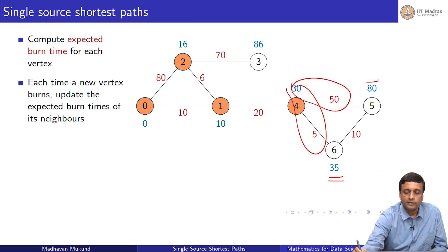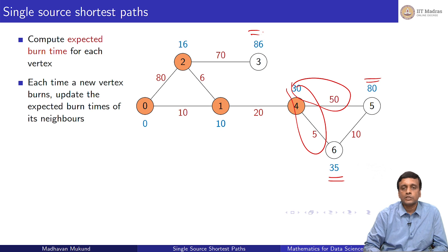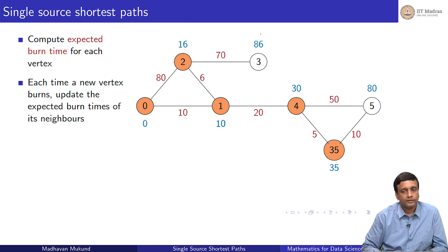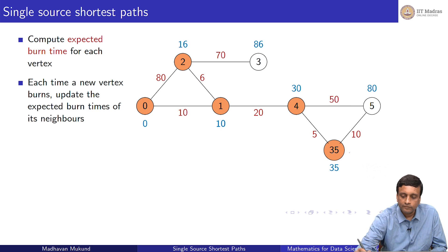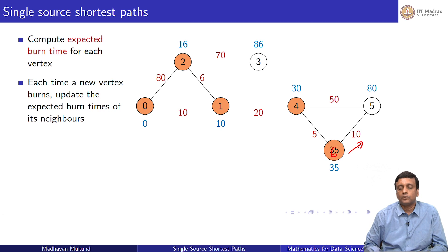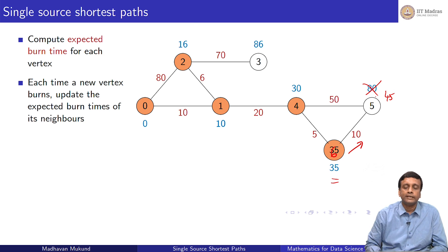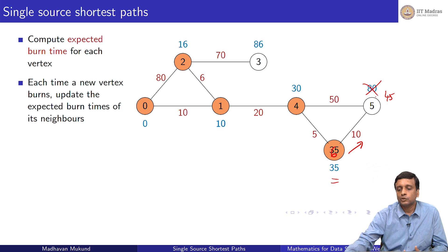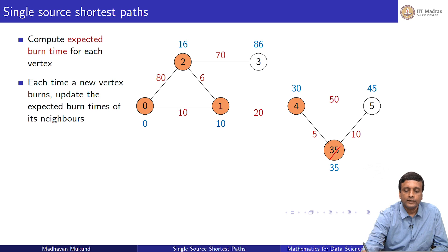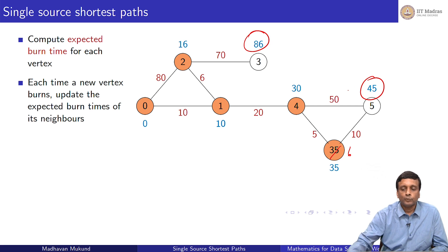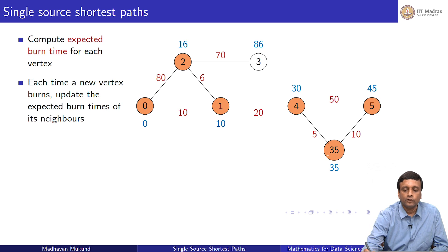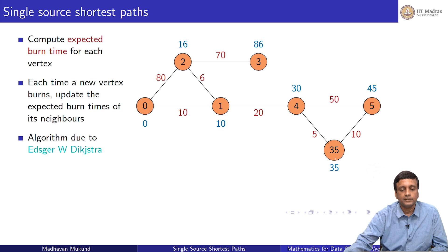Among the unburnt vertices — 35, 80, and 86 — the next one to burn is clearly vertex 6. Having burnt vertex 6, a new fire passes to vertex 5. Since vertex 6 burned at 35, vertex 5 is going to burn at 45. My previous information was 80, so I remove that and make it 45. Having improved that to 45, I burn vertex 5 at t equals 45. Finally, at 86, vertex 3 burns.